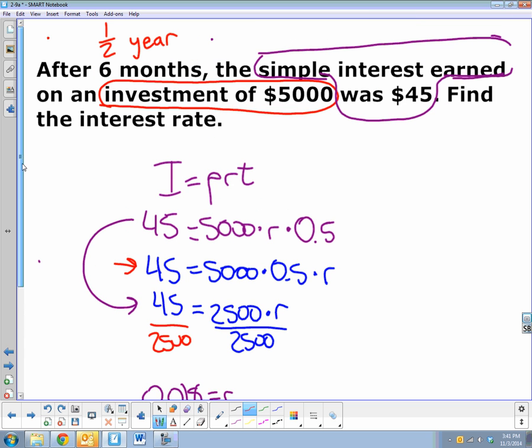If I lost you on that, maybe try the same type of problem again and just change the numbers around. See if you can do the same idea. Instead of 5,000, maybe make this, maybe make it 10,000. And instead of $45, maybe make it $75. And try the exact same thing again. Give it a shot with new numbers, see what you can get. But that's how you set it up when you don't know the rate.